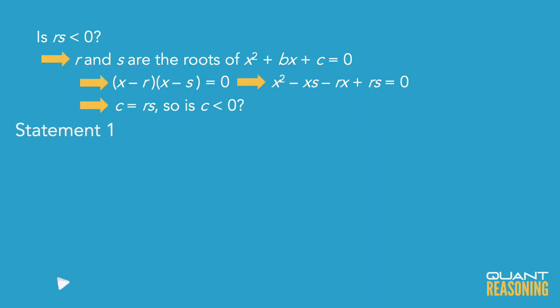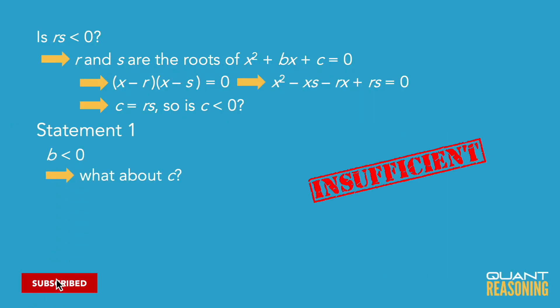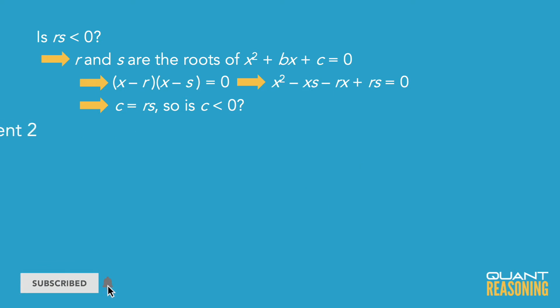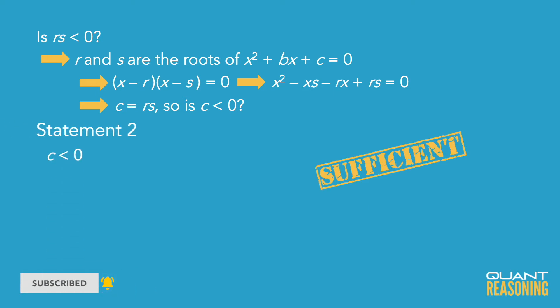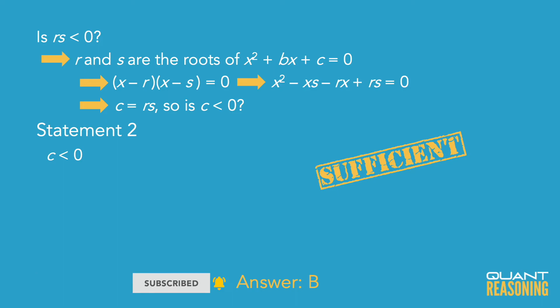So to recap, we wanted to know whether or not c is negative. Statement 1 tells us something about b, so that's not sufficient on its own. Statement 2 tells us that c is negative, so statement 2 is sufficient on its own, and the correct answer is B.